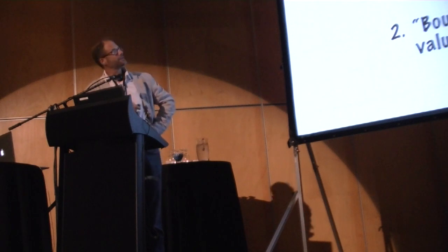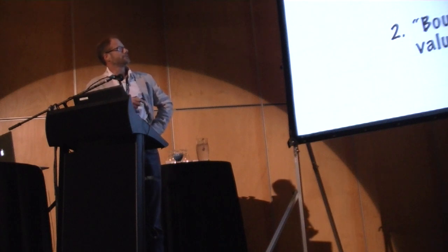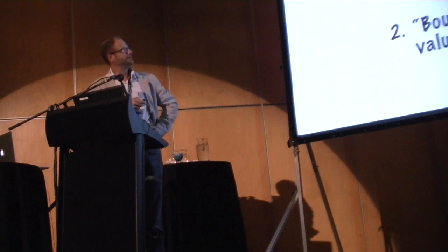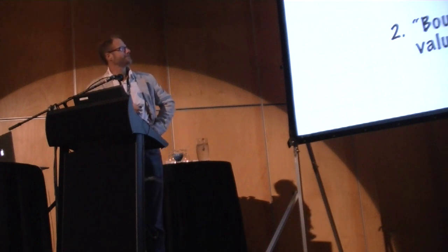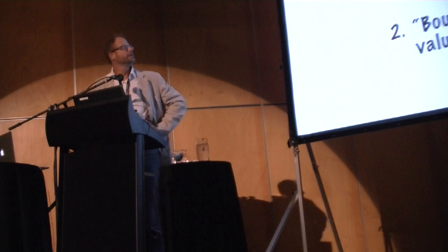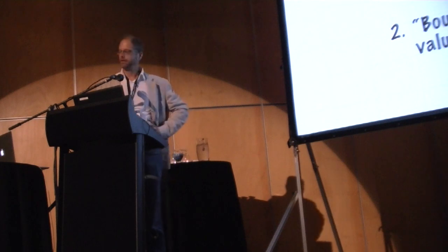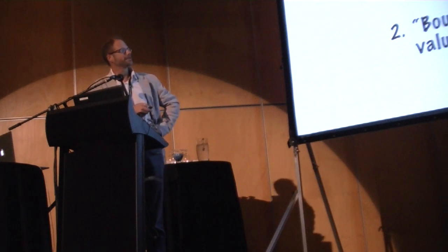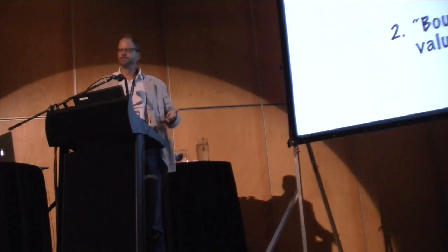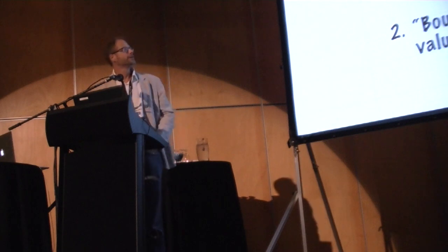The boundary value problem asks: what happens to the statistics of x if we change M — say, we make the field bigger or add fertilizer? What's going to happen to the average population of sheep? In an atmospheric context, the initial value problem is the forecast for next Monday, while the boundary value problem is what would happen if we change the oceans, since the oceans are one of the boundary conditions in the atmosphere. This turns out to be central to the problem of short-term climate prediction.